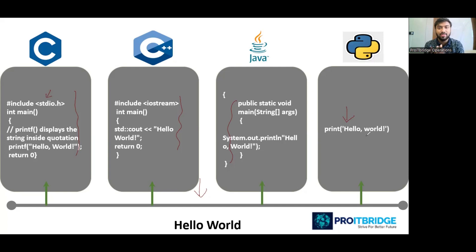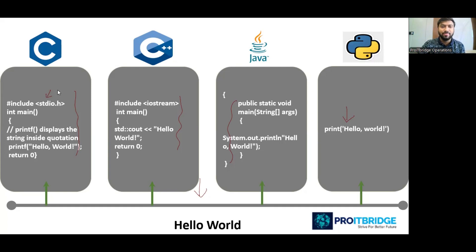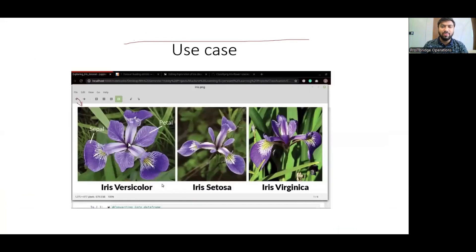The answer is Python — and we're lucky, because Python is exactly the language used for data science coding. So we are lucky that the easiest language is also the one used in data science.